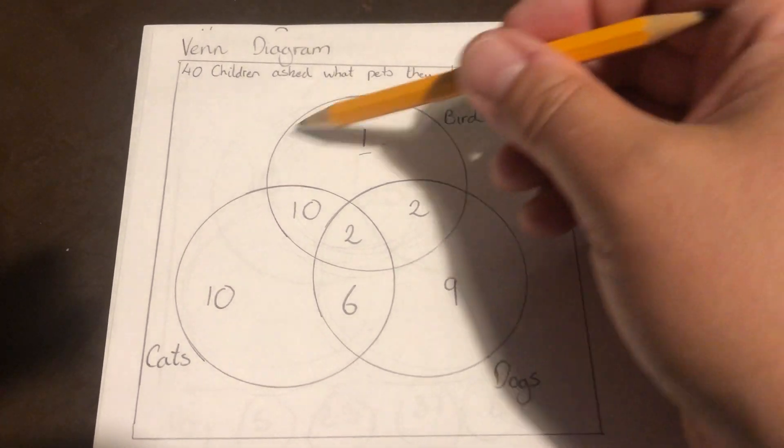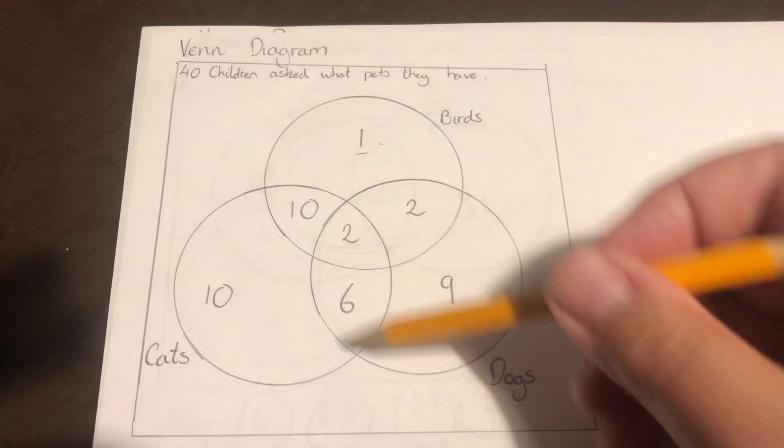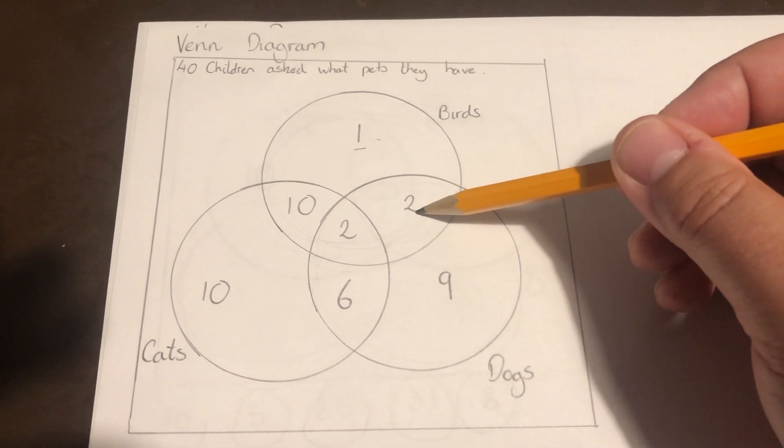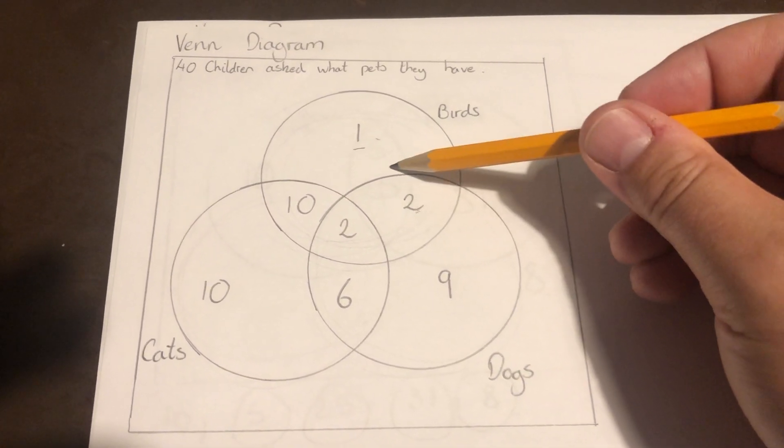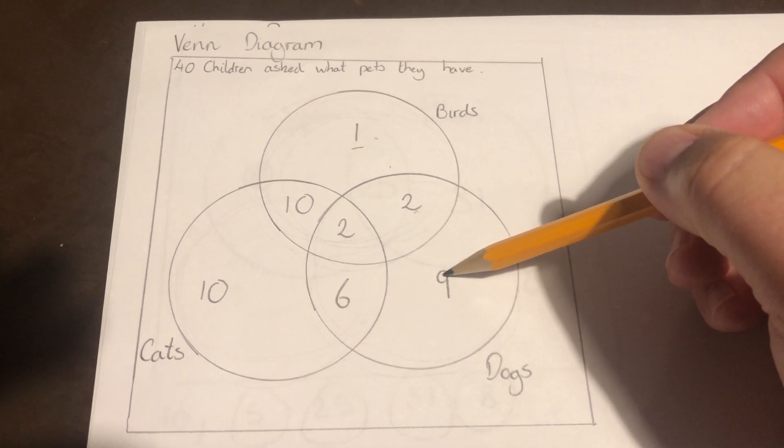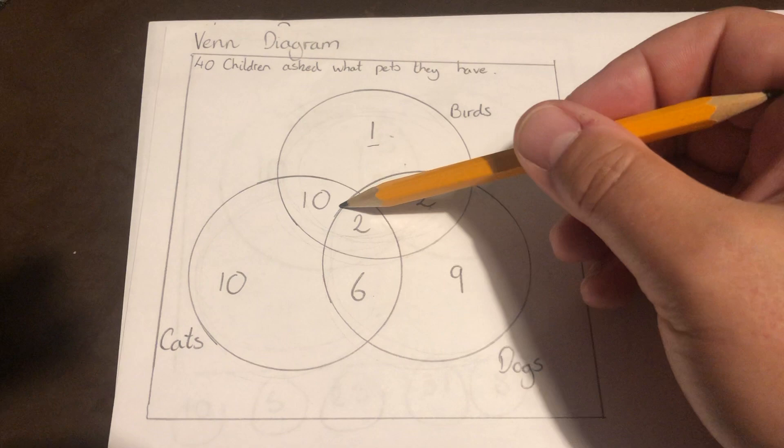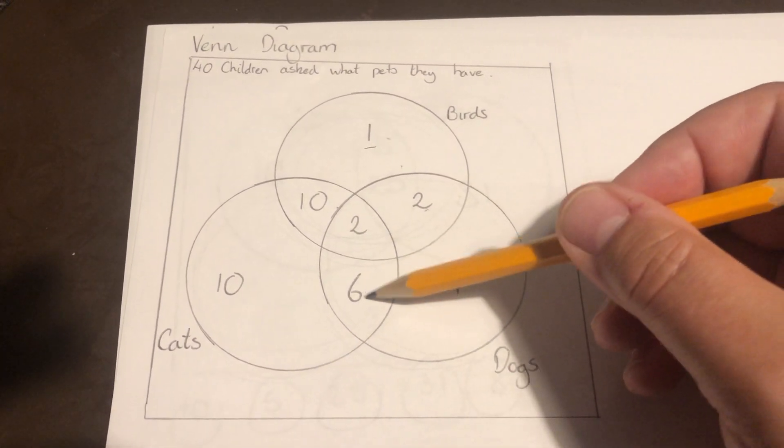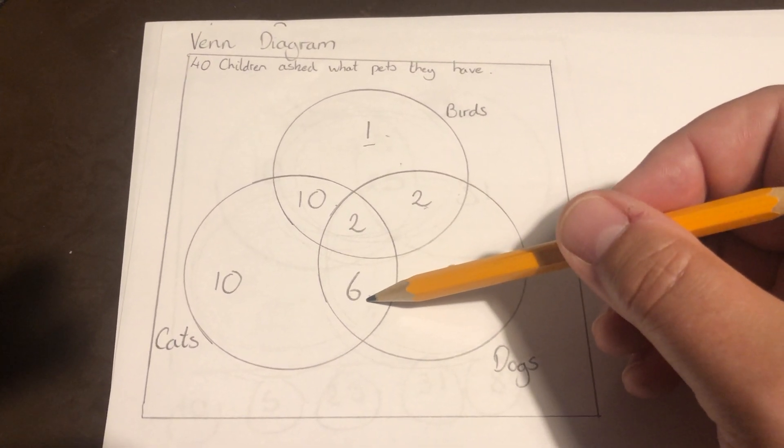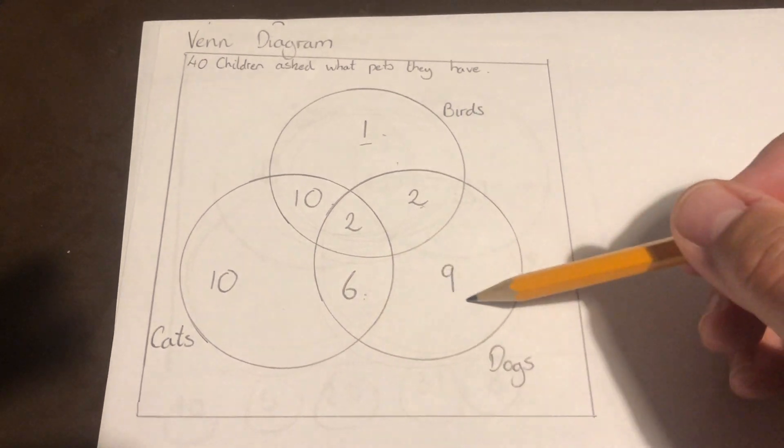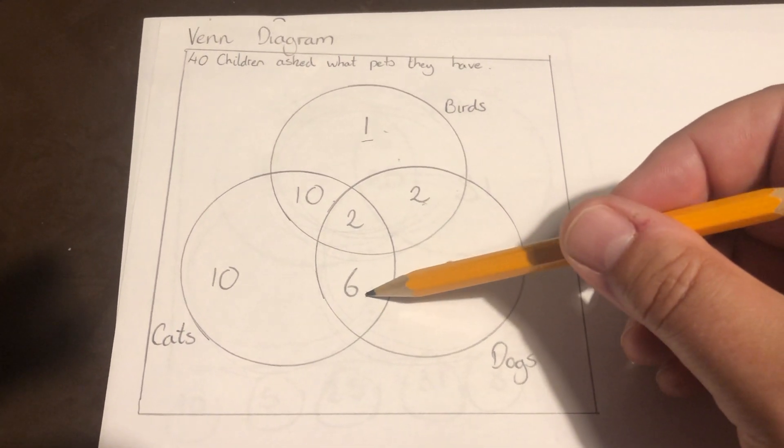This number here, it's in the bird circle and it's in the dog circle. That means two children have a bird and a dog. The 6 here is in the cat circle and it's in the dog circle, which means six children have a cat at home and they have a dog at home. So it's both of them.